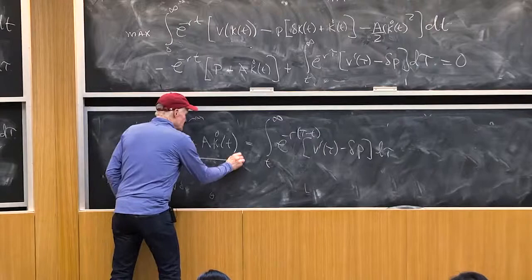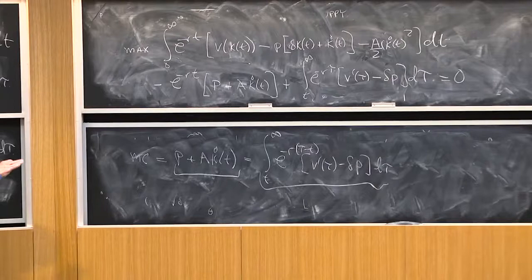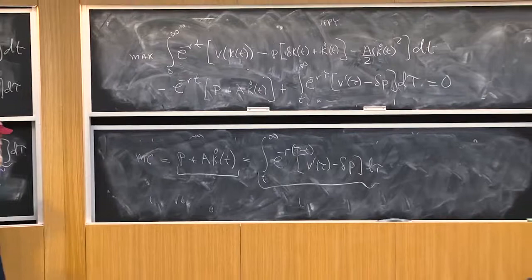So it says I have my marginal cost of investment equal to that discounted value of net returns on capital, just like I had before. So viewed in the short run, this model looks almost exactly like my other model, right? Because I got a rising supply price here.